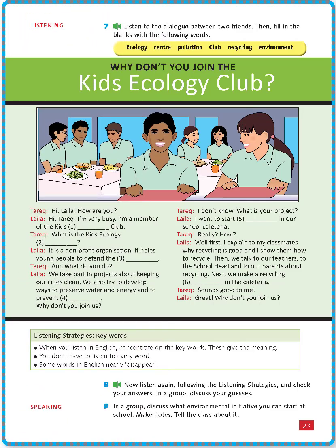Grade 7 Module 2 Page 23 Exercise 7: Listen to the dialogue between two friends, then fill the blanks with the following words: Ecology, Center, Pollution, Club, Recycling, Environment. إذن سأقرأ المادة الصوتية وستملأ الفراغات بالكلمات الموجودة في الصندوق الأصفر.